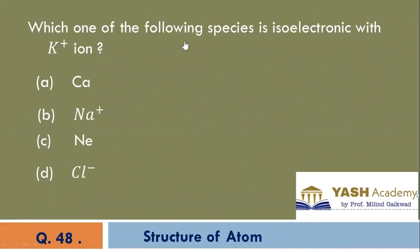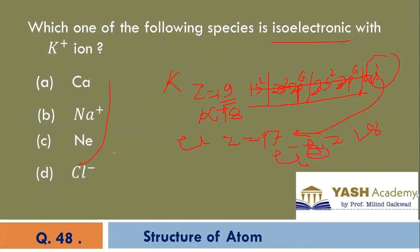Which one of the following species is isoelectronic with K plus ion? Cl minus has the same electron number as K plus ion. This is the isoelectronic with K plus ion.